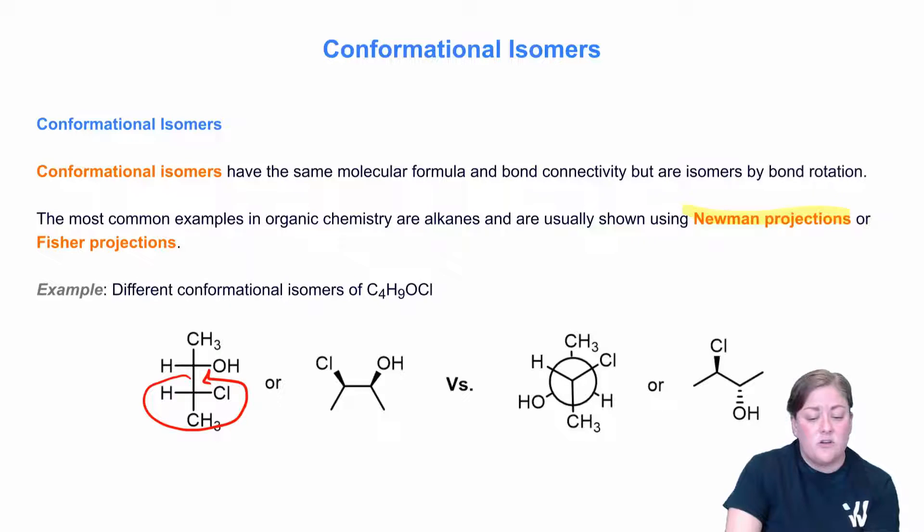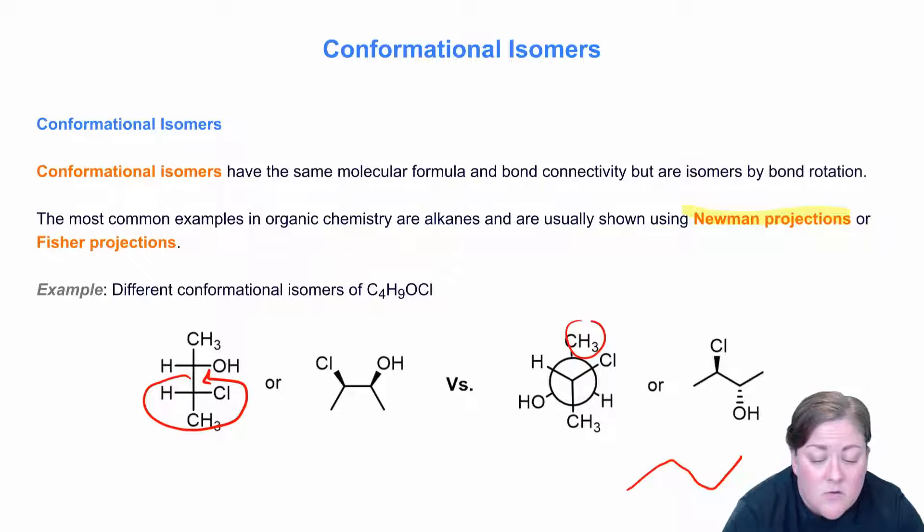Now when we unwind this structure here, if I was to take this Newman projection, the methyl group would be down, then I'd have two carbons, and then this methyl group in the back here would be here. Then you'll notice that in one of these structures, I have the chlorine atom which is on the front carbon on the right hand side.